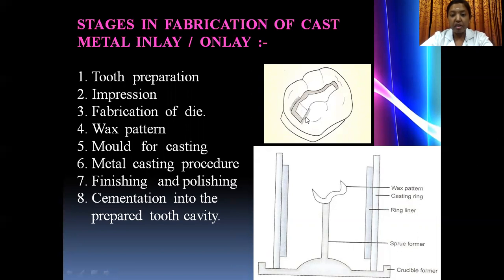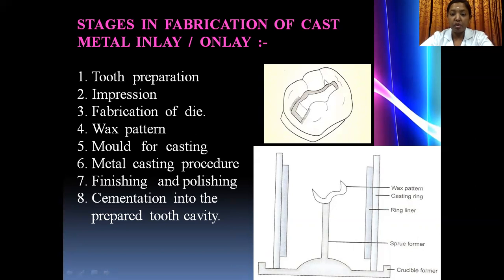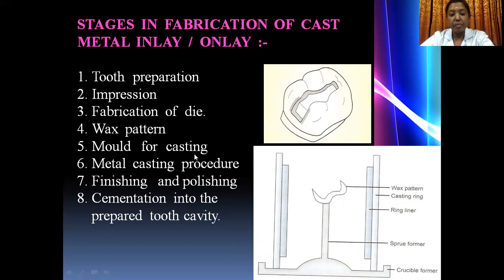Once the impression is taken, you fabricate the master cast. Once the master cast is fabricated, two wax patterns are taken. Please remember, for an inlay and onlay, two wax patterns are taken. The direct wax pattern is taken directly from the patient's mouth from the prepared cavity. The indirect wax pattern is taken in the dental lab by the dental technician from the master cast.